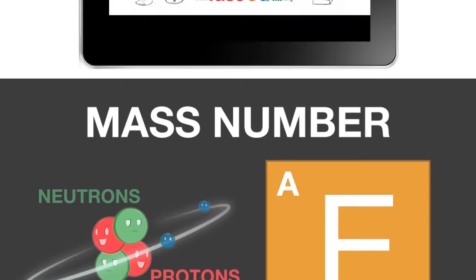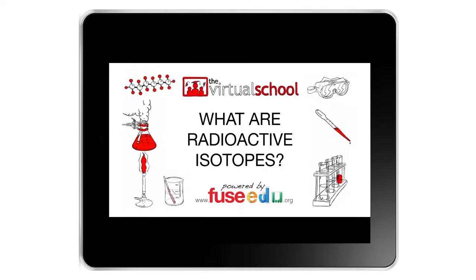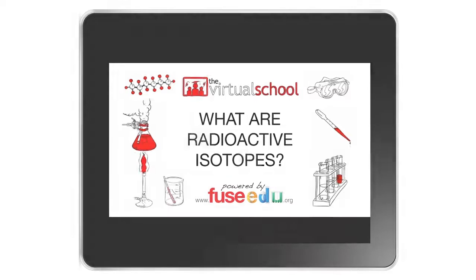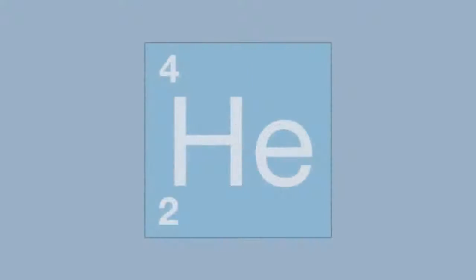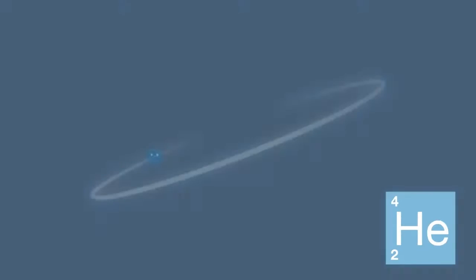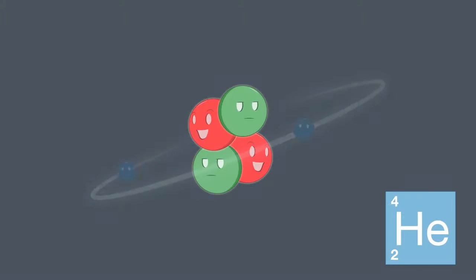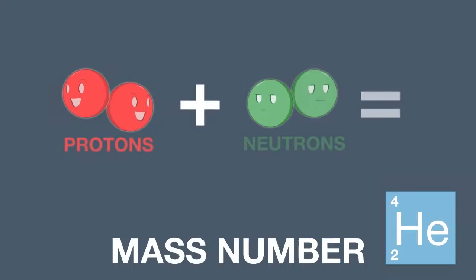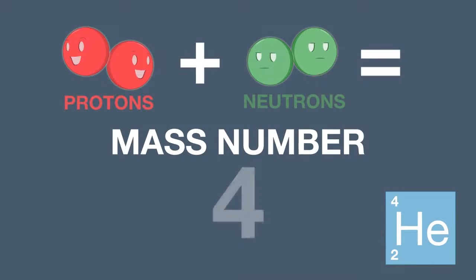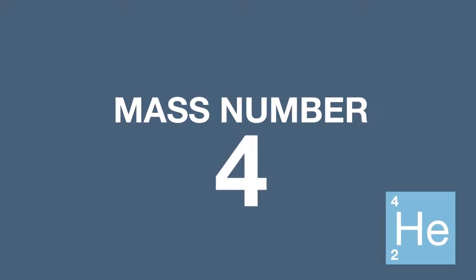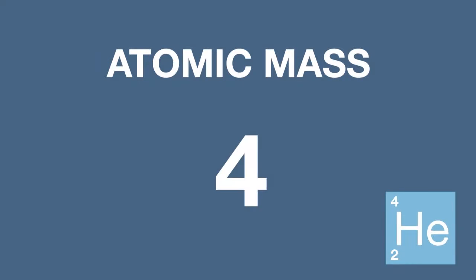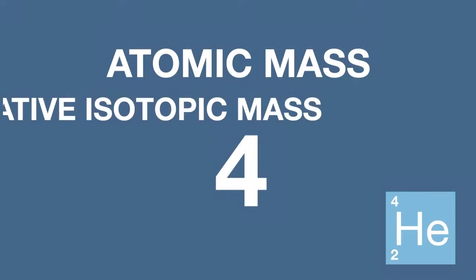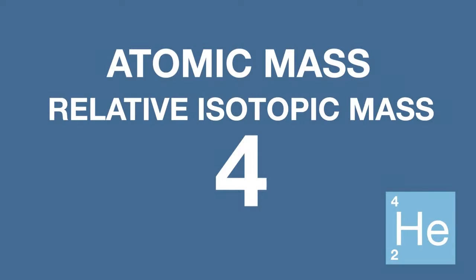You may also wish to refer to our lesson on radioactive isotopes. As a quick reminder, here is a helium atom. It has two protons and two neutrons in the nucleus. This gives it a mass number of 4, which means it has an atomic mass, or relative isotopic mass, of 4.